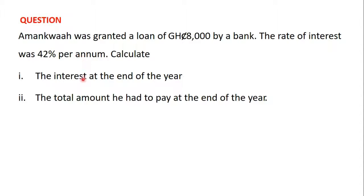The question wants us to find the interest that Amankwa paid at the end of the year, and the total amount of money he had to pay to the bank at the end of the year. We learned that if someone takes a loan from the bank, that amount of money is known as the principal. So here, 8000 Ghana cedis is the principal. The rate of interest is 42%, and the period of time is 1 year.